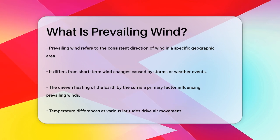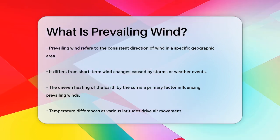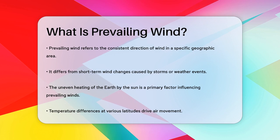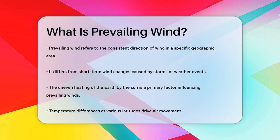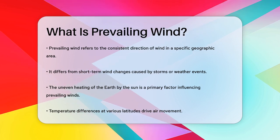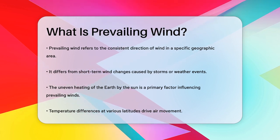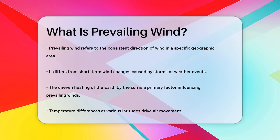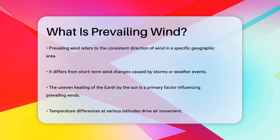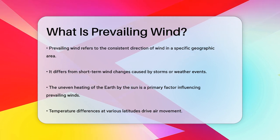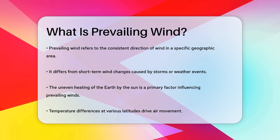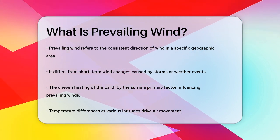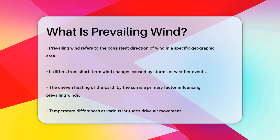Prevailing wind is the direction in which the wind normally blows in a particular geographic area. It's not about the wind that changes direction with storms or other short-term weather events, but rather the consistent direction of airflow over a region.